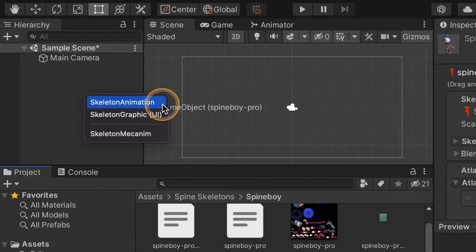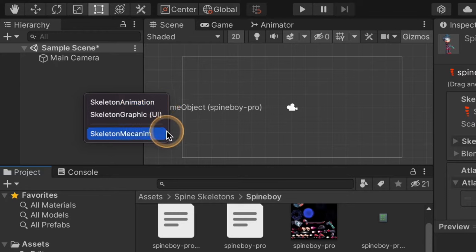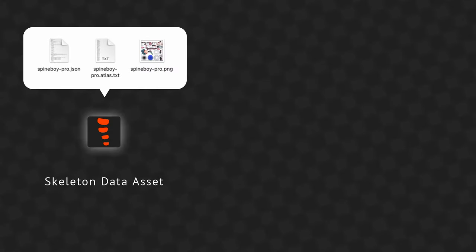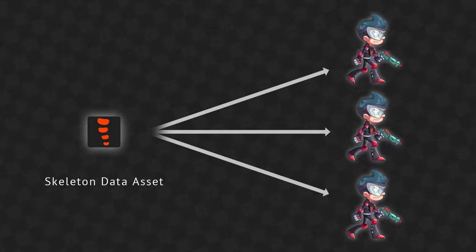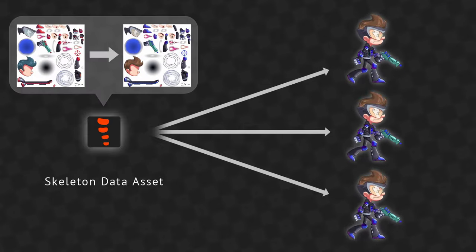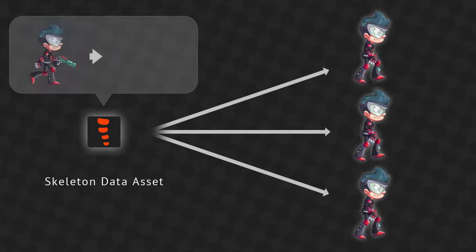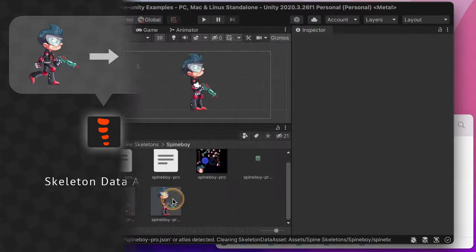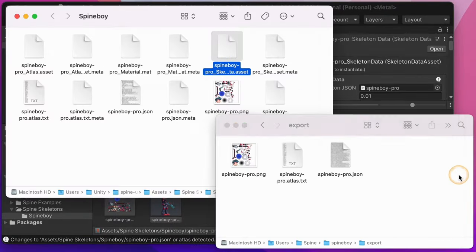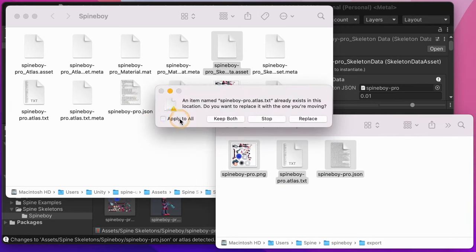Besides Skeleton Animation, there are two other types of skeleton game objects: Skeleton Graphic and Skeleton Mecanim. We'll look at those later. A Skeleton Data Asset can be used for multiple skeleton game objects in your scenes — the data is loaded into memory only once and is shared. For example, if you change the texture atlas or an animation or other skeleton data for a Skeleton Data Asset, all the game objects that reference that asset will change. Once imported, you can update the skeleton by simply overwriting the modified file.